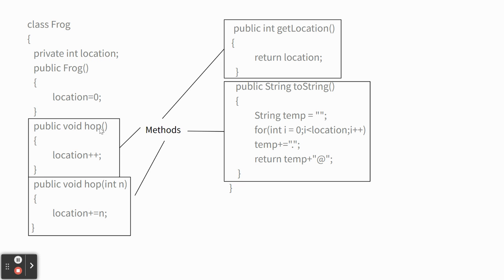There are four methods in this class. One method called hop takes no information and adds one to the location variable, so calling hop moves the frog one space forward. Another method takes an integer and hops that many spaces — so you could say hop(11) and the frog would go 11 spaces. There's also a getLocation method which has a return statement that sends back the value of the location variable.